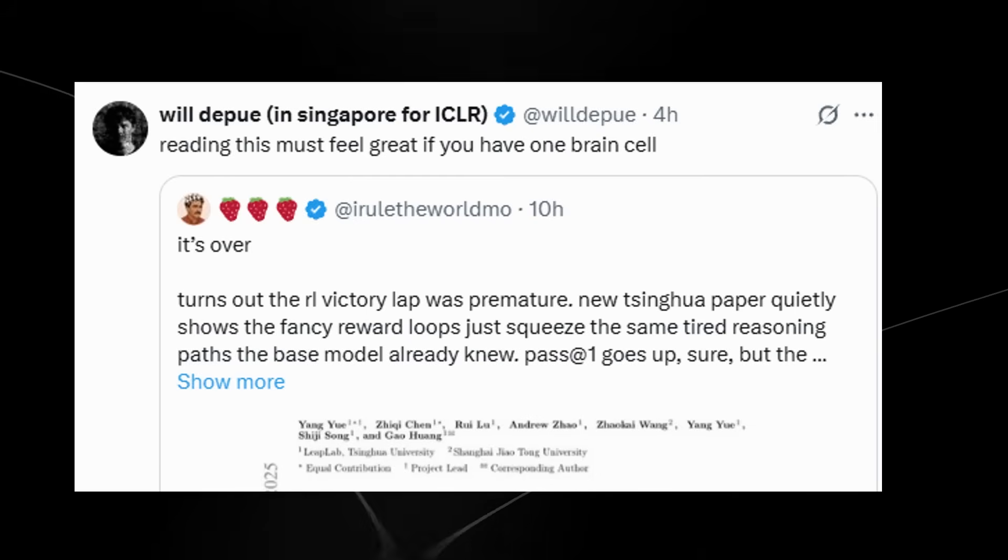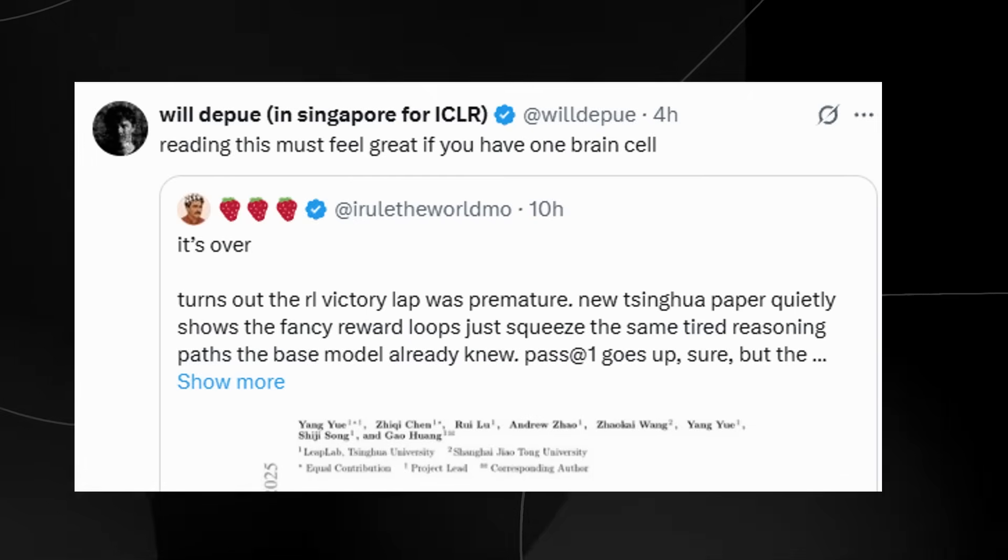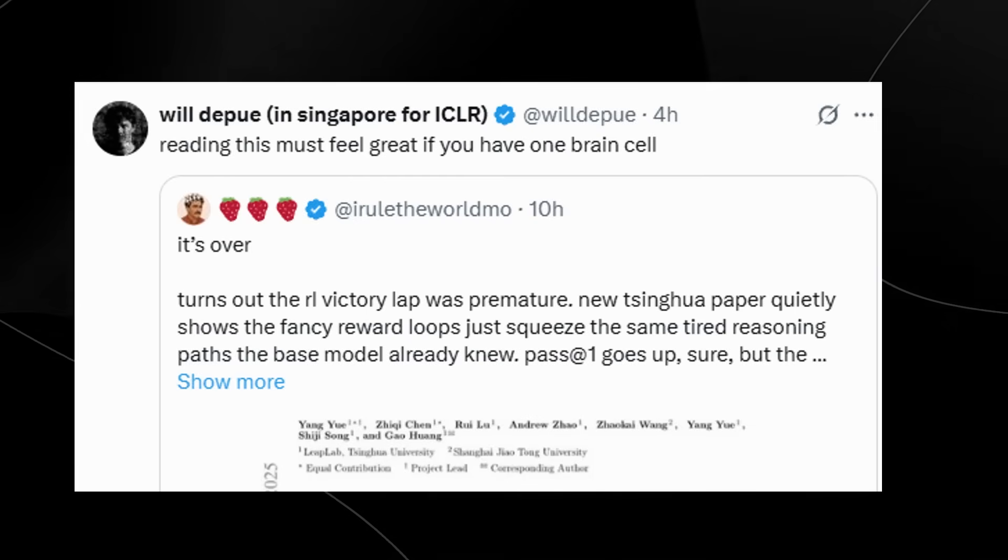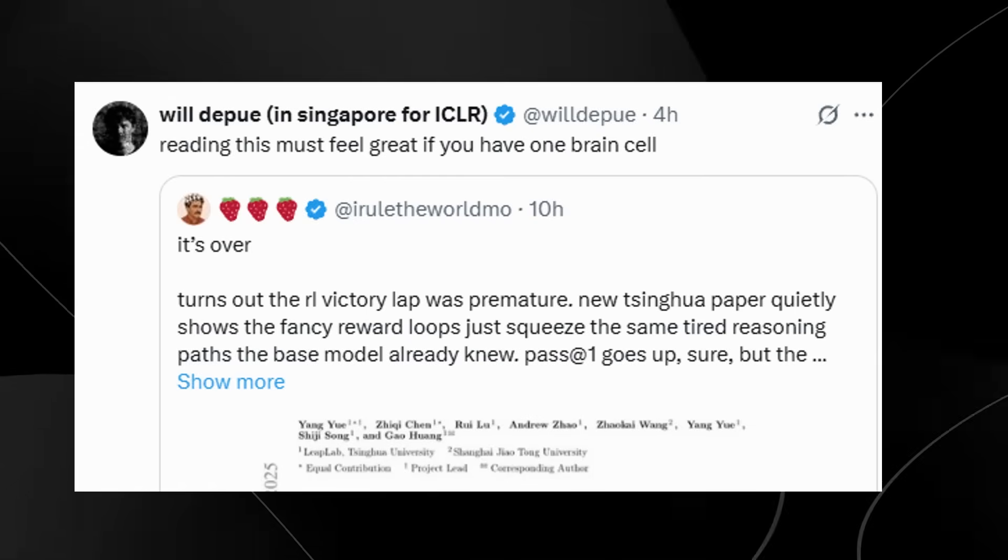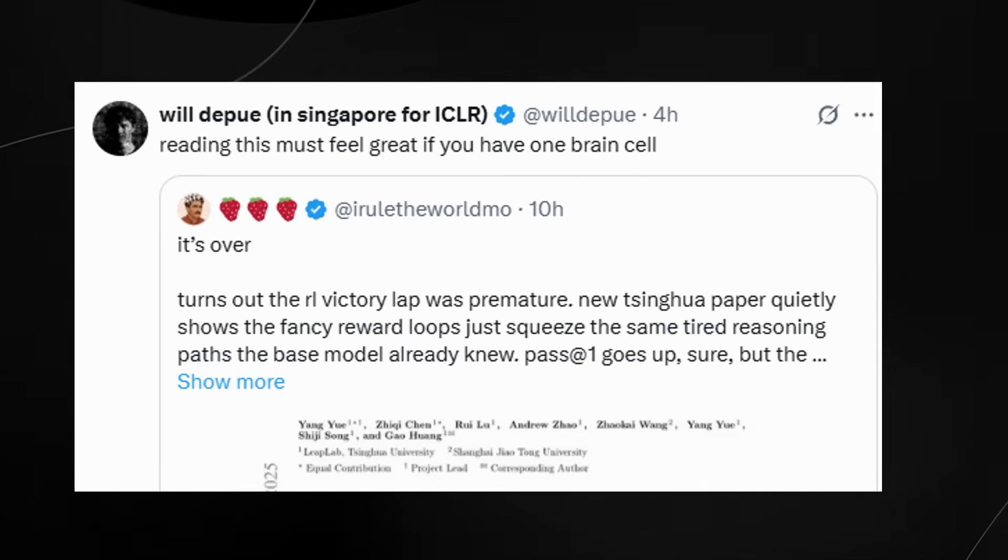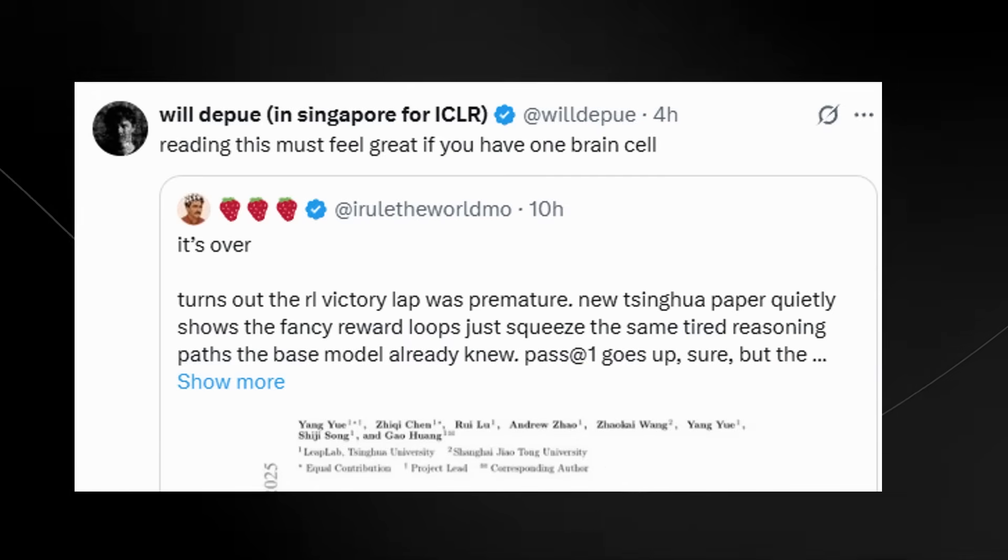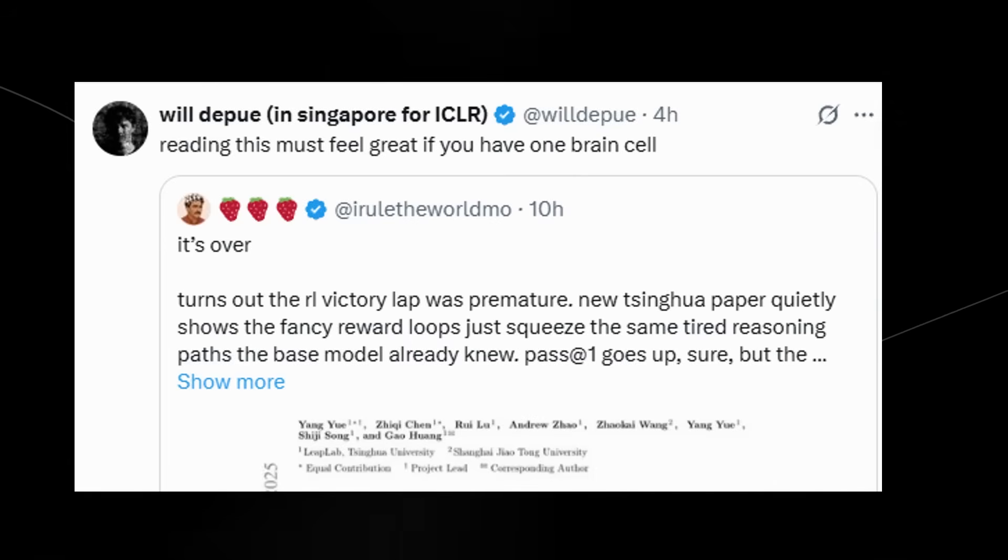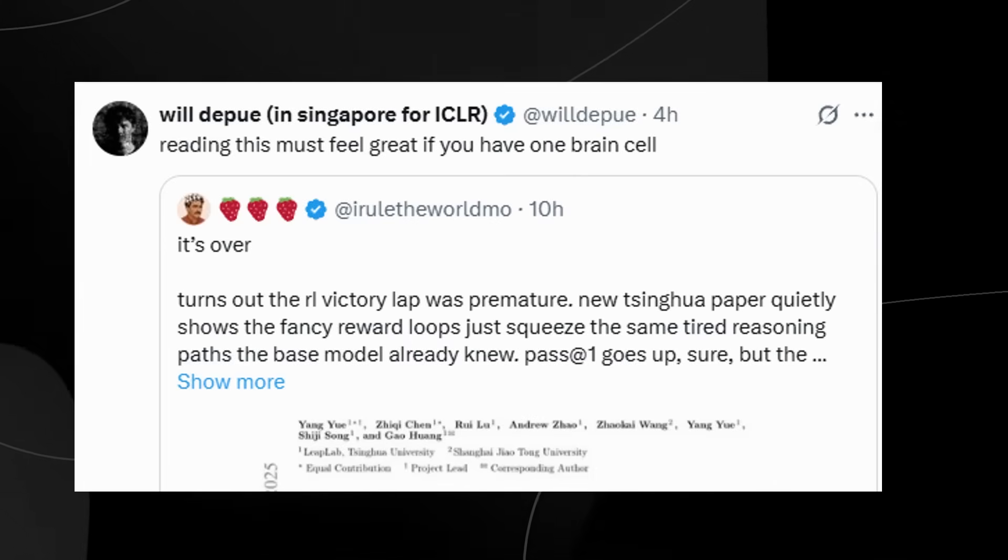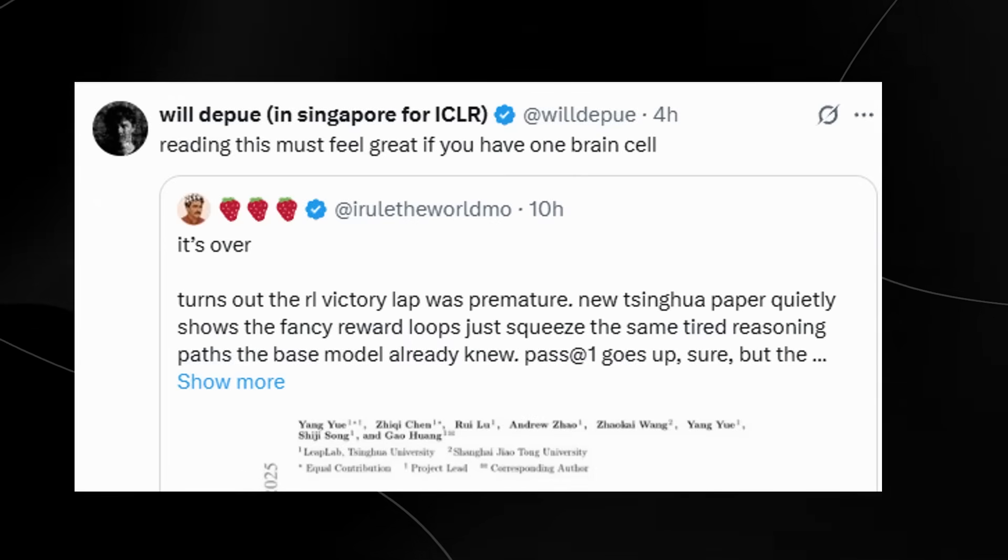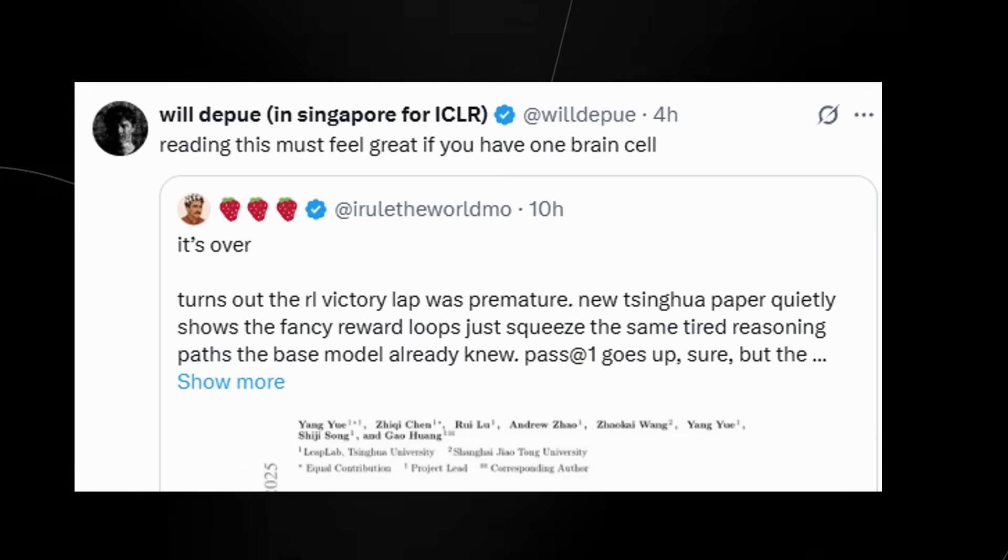If the model can reliably choose the right approach immediately, it's definitely going to be more intelligent than a model that needs many random attempts to find the correct path, even if both theoretically contain the same capabilities. The real limitation highlighted in the paper is that the reinforcement learning appears to have a ceiling. It can't really teach a model to solve problems that are fundamentally beyond the base model's capability frontier, and that's where other approaches like distillation might be needed, or even other architectures.